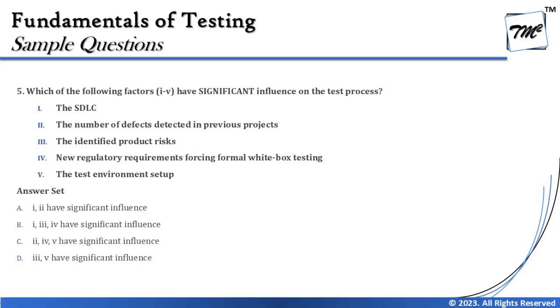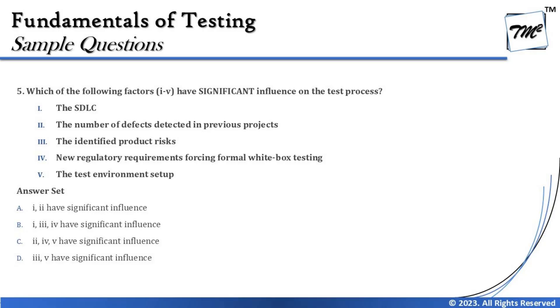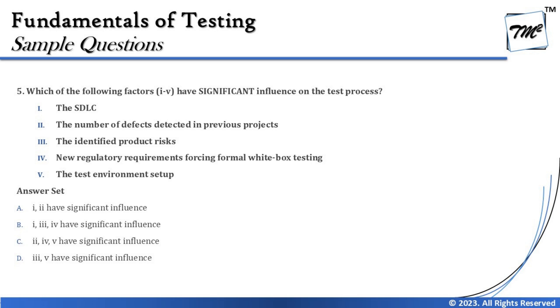The third factor, identified product risks, is a direct influencer of the test process — we shift left, prioritize test cases, and perform proportionate testing. Every part of testing is directly impacted by identified product risks, which are mitigated by performing the required tests. The fourth factor, new regulatory requirements forcing formal white box testing, is also important — testing addresses functional requirements as well as non-functional requirements, standards, and regulatory compliance.